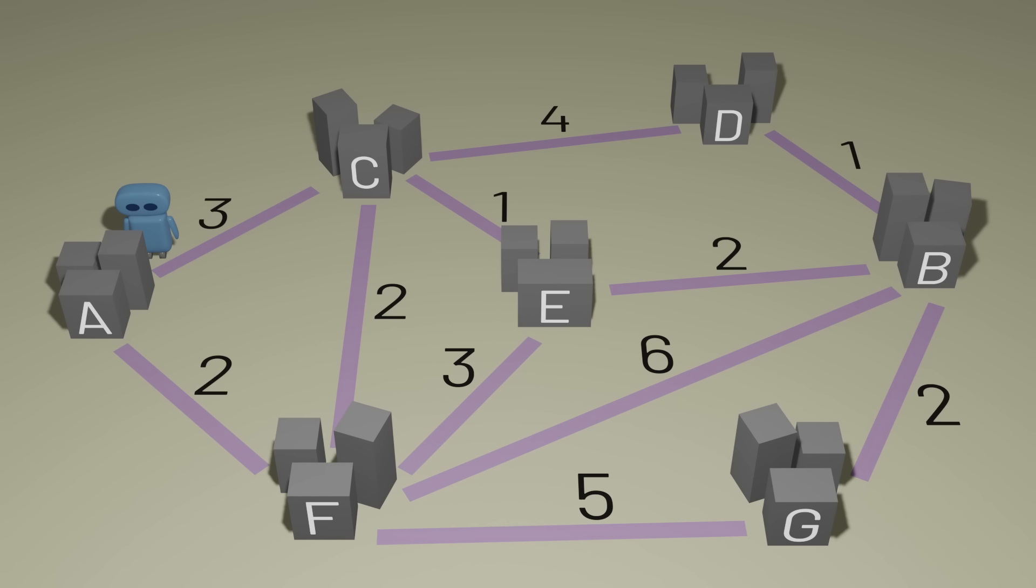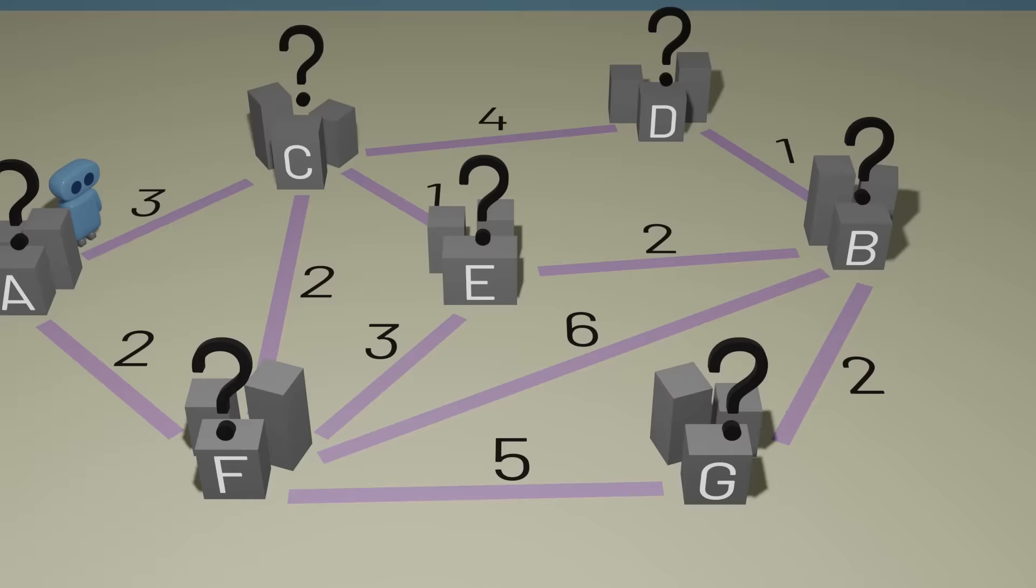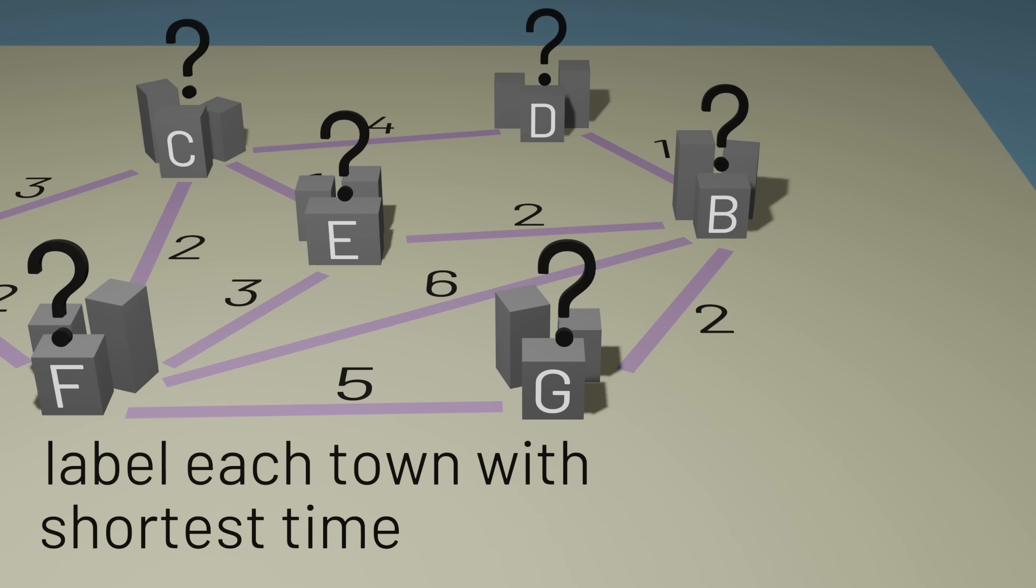Ultimately, we need to figure out how many minutes it will take to get to town B. In doing so though, it might be useful to figure out how many minutes it would take to get to the other towns too. So ideally, we'd want to label each town with a number representing the shortest time required to get there. But of course, we don't know that information yet. So instead, we'll label each town with the shortest time we've found so far to get to that town.